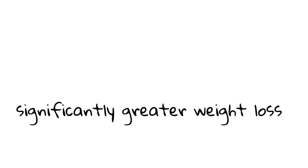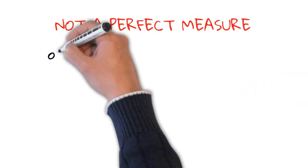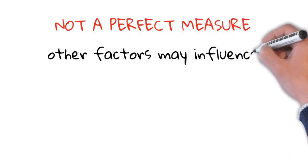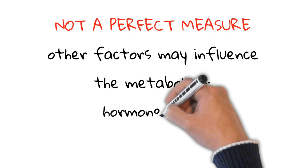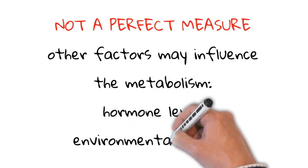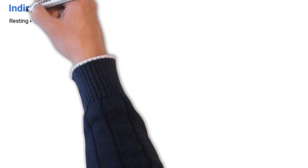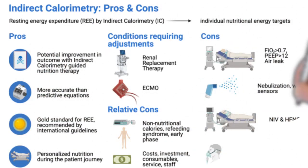Despite its many applications, it is important to note that indirect calorimetry is not a perfect measure of energy expenditure. There are other factors that can influence the metabolism, such as hormone levels and environmental factors, which can affect the accuracy of the measurement. However, indirect calorimetry remains a valuable tool in understanding the body's energy requirements and can aid in the development of effective interventions to promote health and fitness.